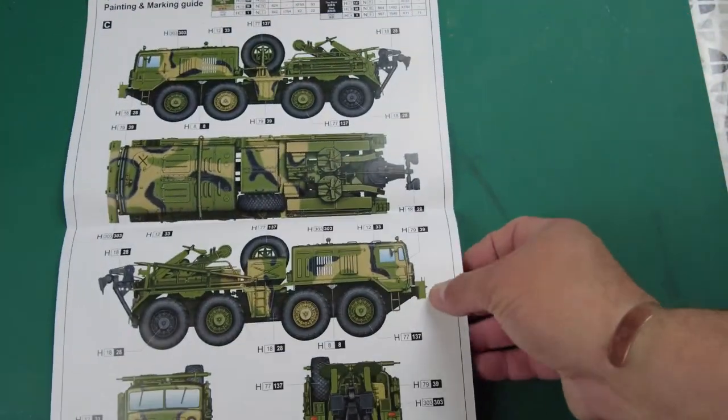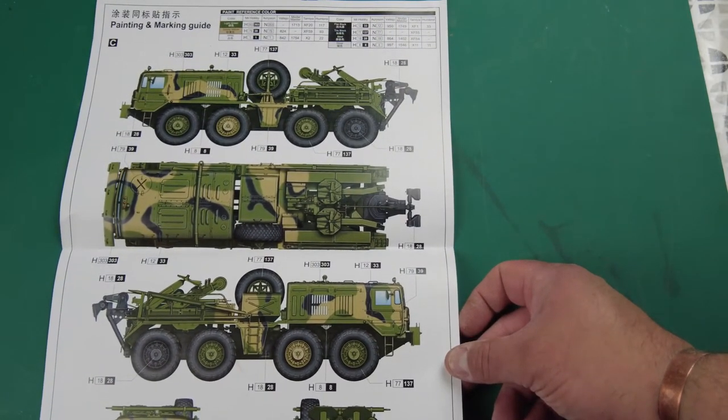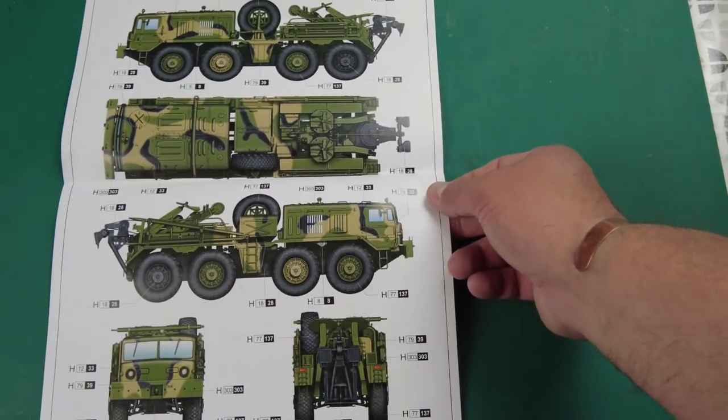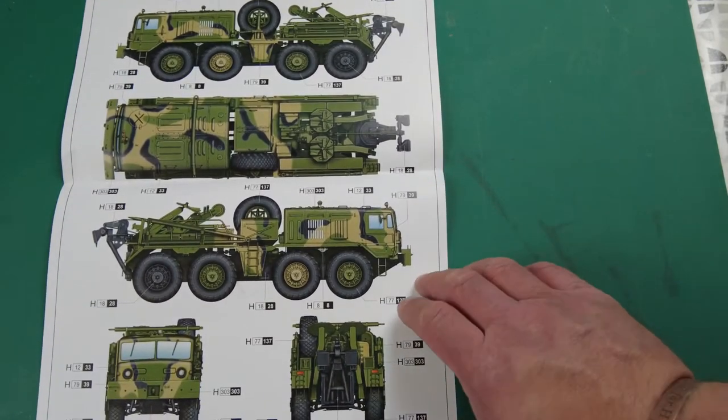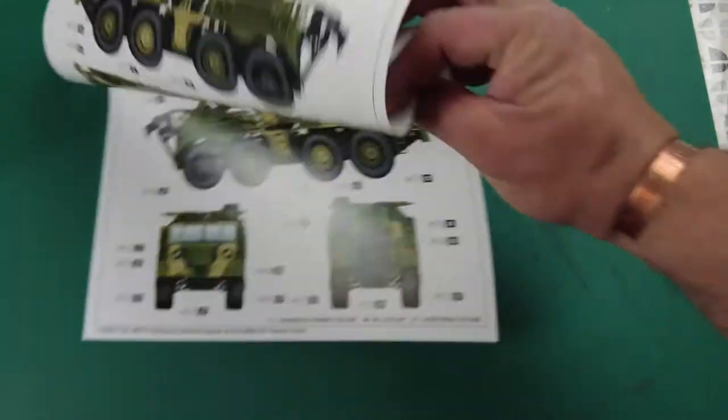And then we turn it over, we've got a fantastic Russian tri-color green, sand, and black camouflage scheme which looks interesting indeed. No unit markings, doesn't tell you what the vehicle's for, you need to do a bit of research if you want to do a specific vehicle. But all the same, it looks like a fantastic kit.